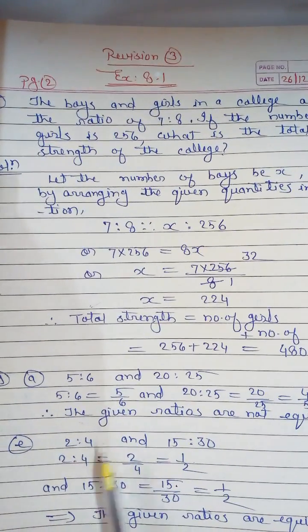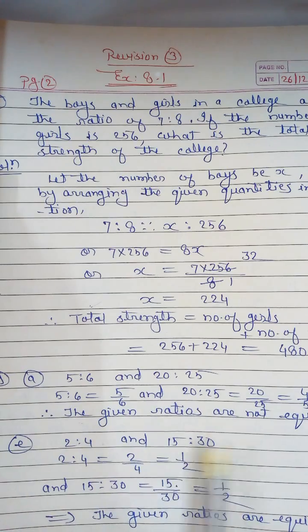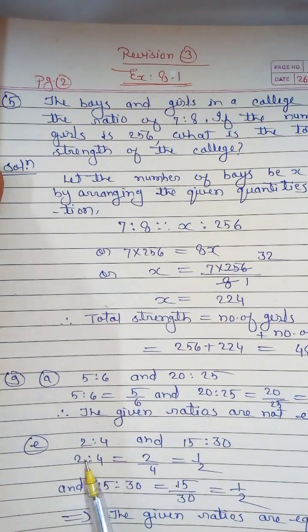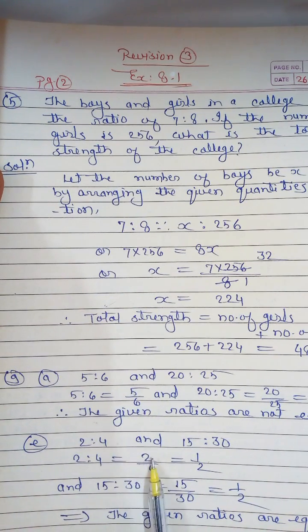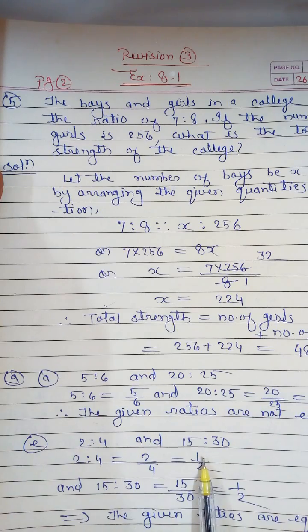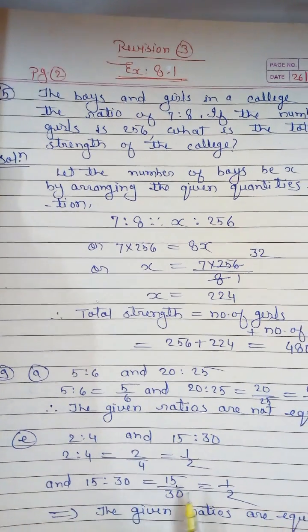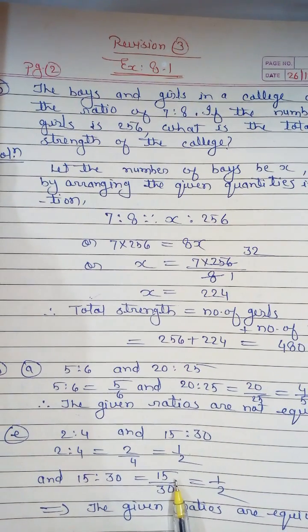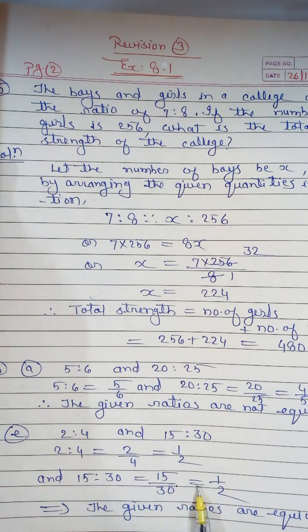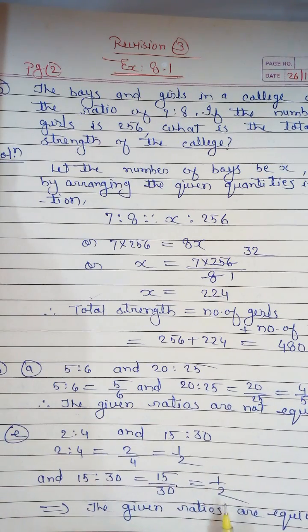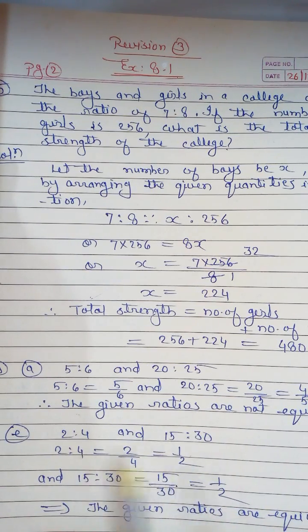Another example: 2 is to 4 and 15 is to 30. The ratio 2 to 4 written as 2 upon 4 gives the simplest form 1 upon 2. And 15 to 30 written as 15 upon 30 also equals 1 upon 2. Since the simplest forms of both given ratios are the same, the given ratios are equivalent.